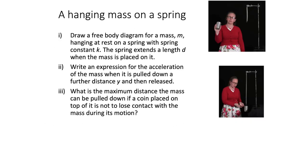We're now considering a hanging mass on a spring. We're asked to draw a free body diagram for a mass m hanging at rest on a spring with spring constant k, where the spring extends a length d when the mass is placed on it. The forces acting on the mass include the weight force pulling it down. Since it's at rest, the net force is zero, so we also have an upward spring force equal to kd, where d is the displacement from the equilibrium position.